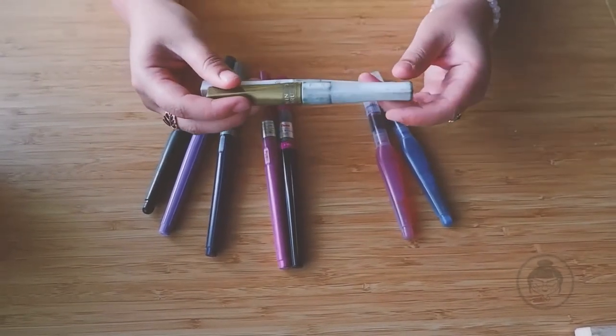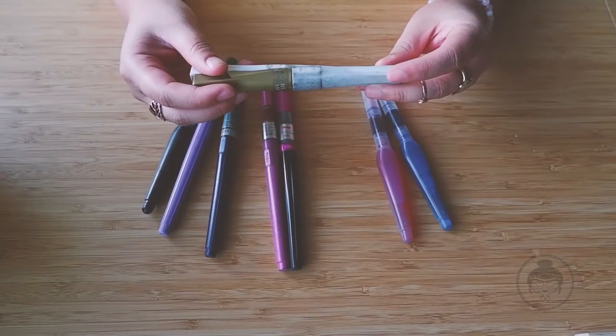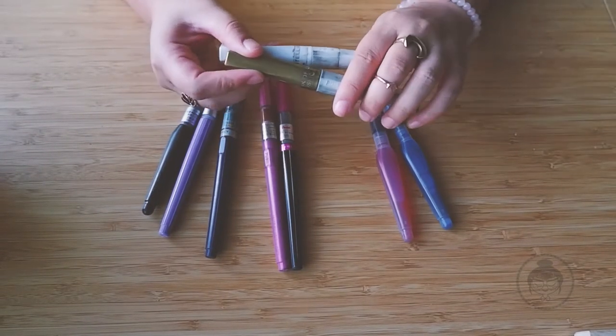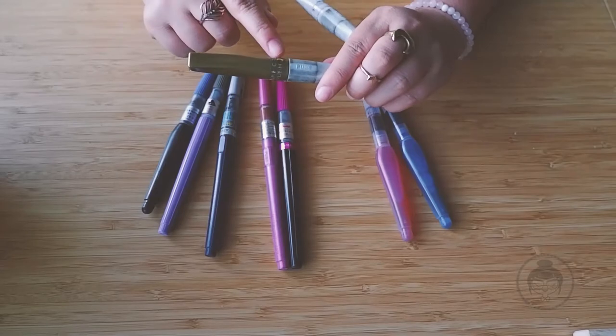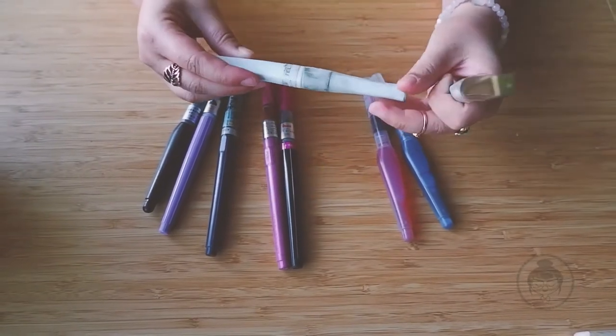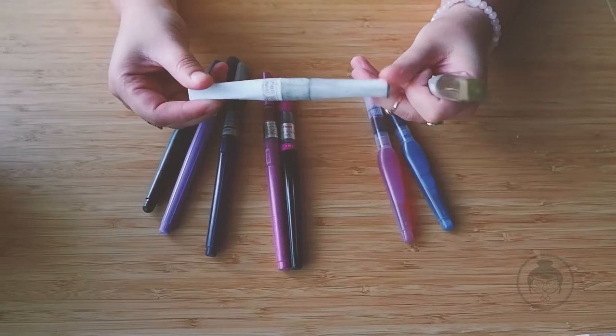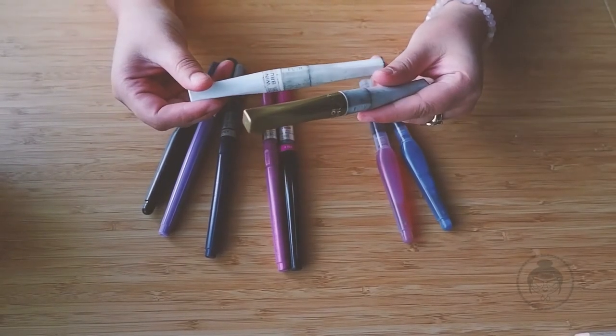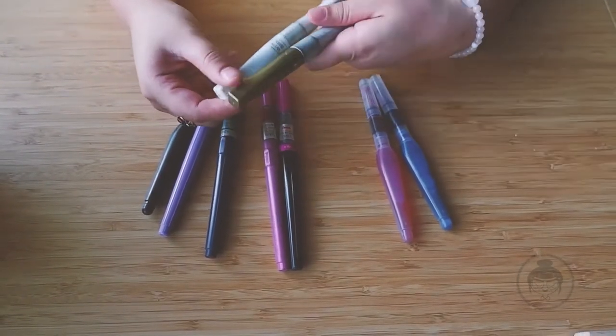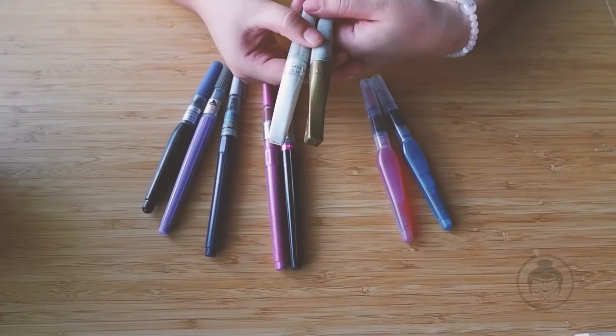Okay, so these two fun pens I discovered maybe like two years ago. They're also by Kuretake. They're from two specific lines called the Wink of Stella and the Wink of Luna line. They come in all assortment of colors and so the two I have here is clear and gold.